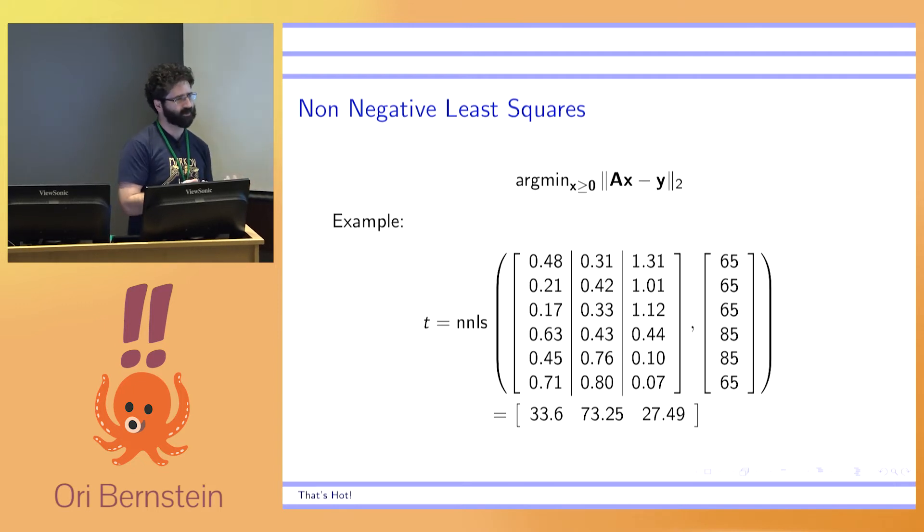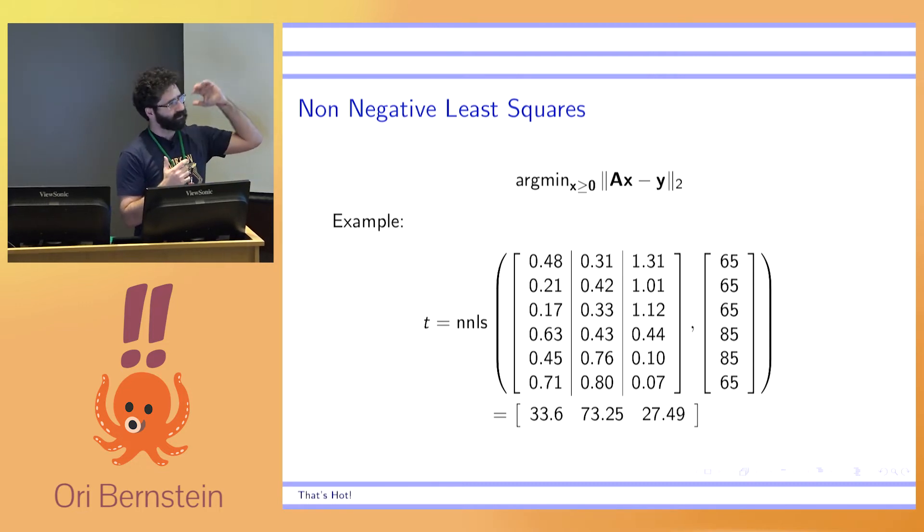And now we have a target temperature. We have a set of rise in temperature versus rise in time vectors. How do we solve for finding the ones that we should use and for how long? All we do is toss it into the non-negative least squares algorithm. Non-negative least squares essentially takes the expression Ax minus y and finds the value of x for which we have the smallest result of that expression.